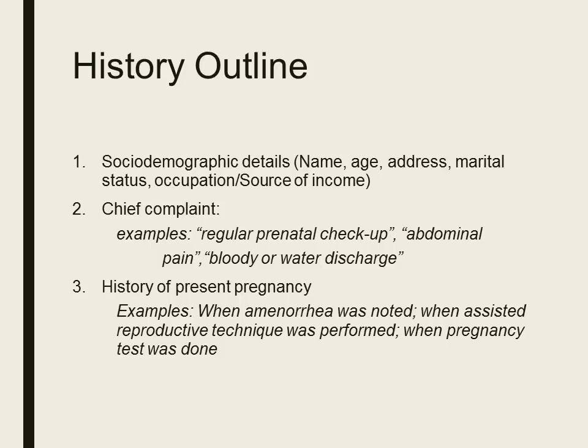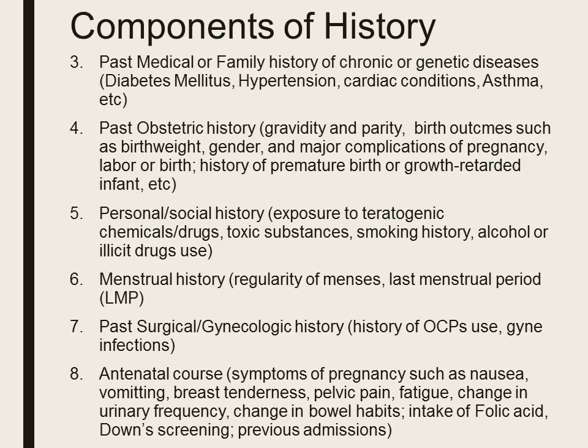Ask about the history of present pregnancy: when she noted amenorrhea, if an assisted reproductive technique was performed and when, or when a pregnancy test was done. Ask about her past medical and family history of chronic or genetic diseases such as diabetes mellitus, hypertension, cardiac conditions, asthma, and the like.